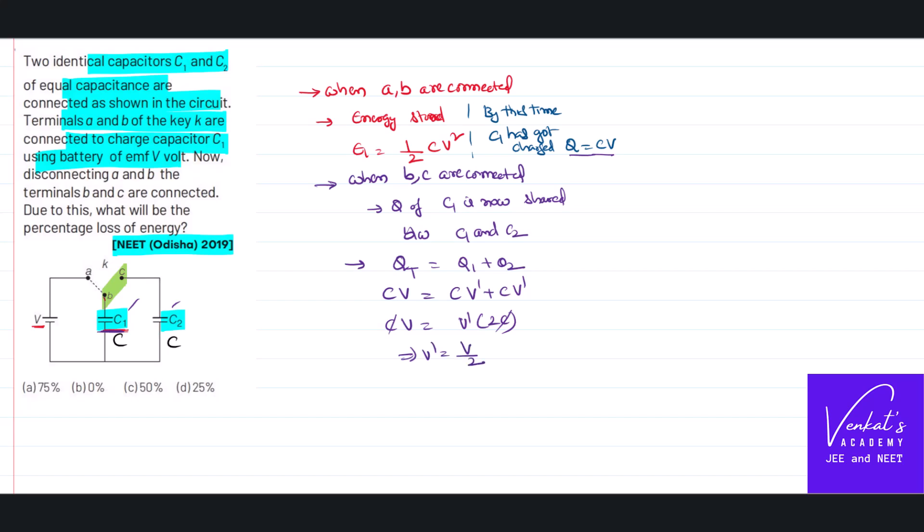So what's the thing that we need to understand is when it is removed from A and B and connected to BC, voltage that is available as V is now shared across both the capacitors as V by 2, as voltage is shared.